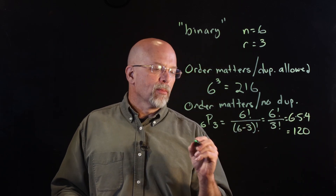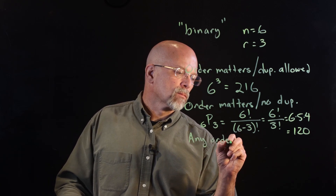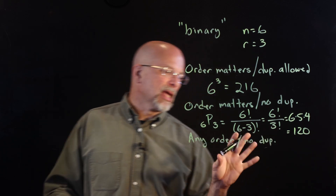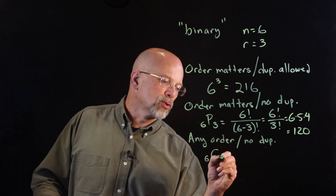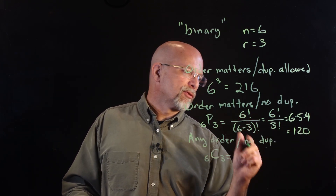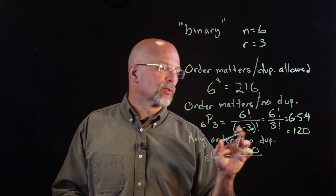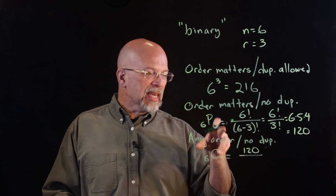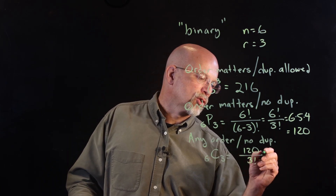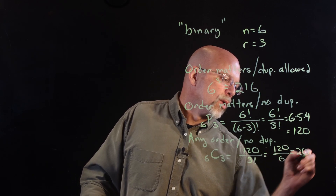Now if we do any order but no duplicates — that's 6 choose 3. We take the permutations result of 120 and divide by the number of orderings of 3 elements, which is 3 factorial equals 6. So 120 divided by 6 equals 20. There are 20 distinct combinations.